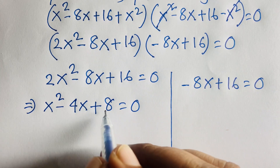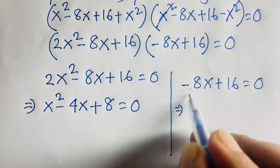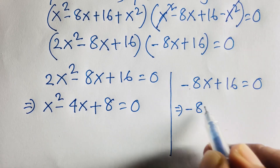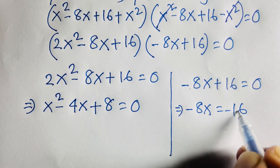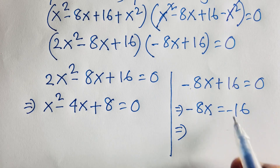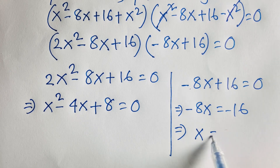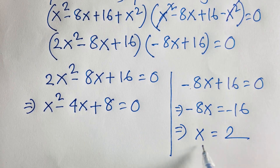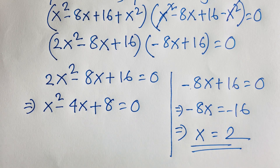16 divided by 2 is 8. For Case 2: minus 8x equals minus 16. Dividing both sides by minus 8, we find x is equal to 2. So x equals 2 is our first solution.